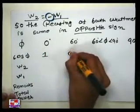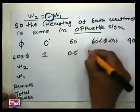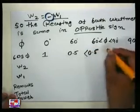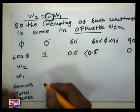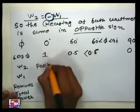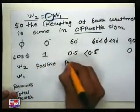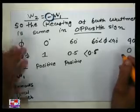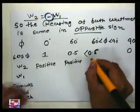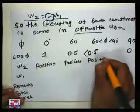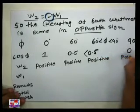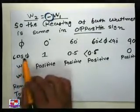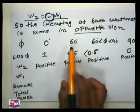In case 1, cos φ = 1, φ = 0°, both W1 and W2 are positive. In case 2, cos φ = 0.5, W1 = 0 and W2 = positive. In case 3, cos φ greater than 0 but less than 0.5, W2 is positive and W1 is negative. In case 4, cos φ = 0, φ = 90°, W2 is positive and W1 is negative with the same magnitude.